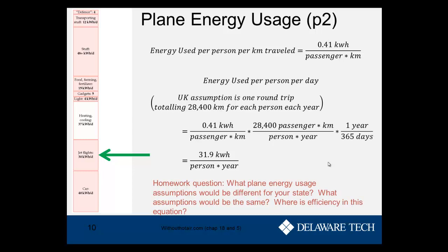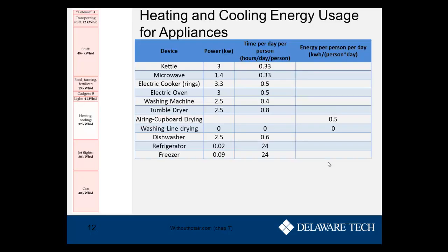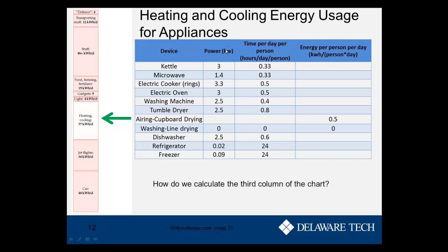Now we'll discuss heating and cooling energy usage. McKay splits this into a few categories. On the bar chart, he attributes 37 kilowatt hours per person per day to heating and cooling. The first category is appliances — you can see a list of heating and cooling appliances in a typical home, with their power, time per person per day, and energy per person per day. For example, washing line drying is zero since clothes are just hung out to dry, while air and cover drying is 0.5.